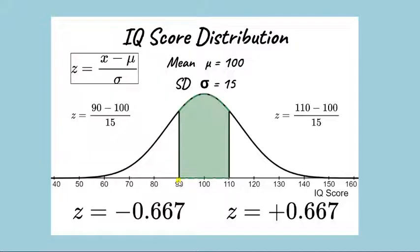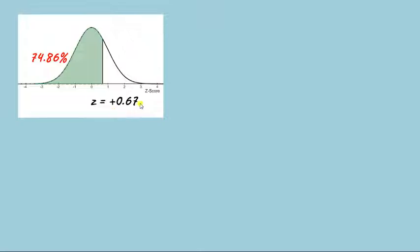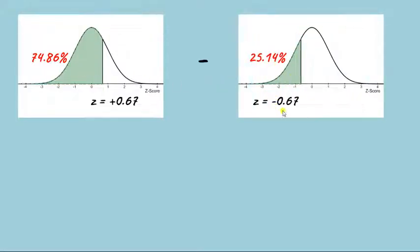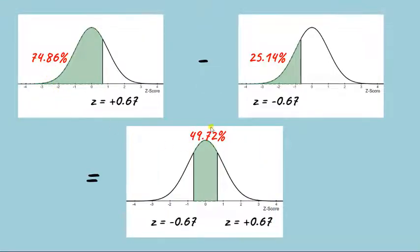Now we can look up these z-scores in the table and see how many scores fall below each. In this case we'll have to round our value of 0.667 to 0.67 since this table only goes to two digits after the decimal place. And if I look in the tables I'll find that for a z-score of positive 0.67 we get a value of 0.7486 and for a z-score of negative 0.67 we'll have a value of 0.2514. So if I subtract 0.2514 from 0.7486 I'll get a result of 0.4972, meaning that approximately 49.72 percent of scores would be expected to fall between the raw IQ scores of 90 and 110.